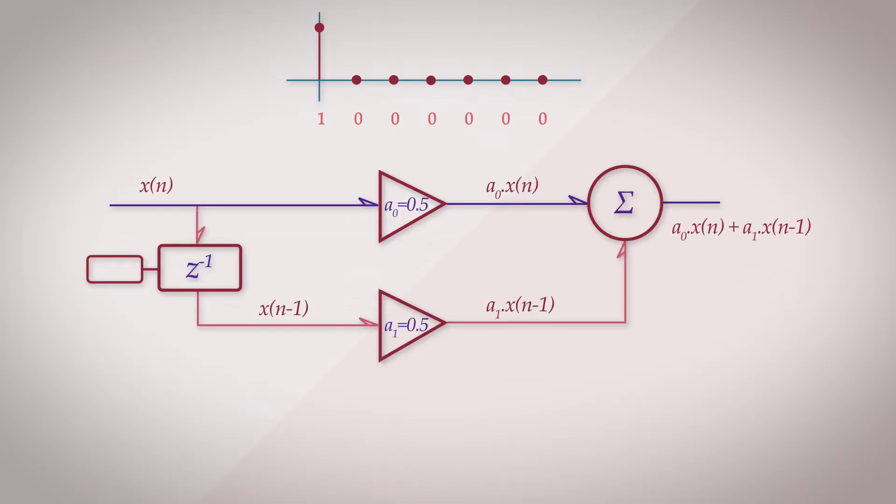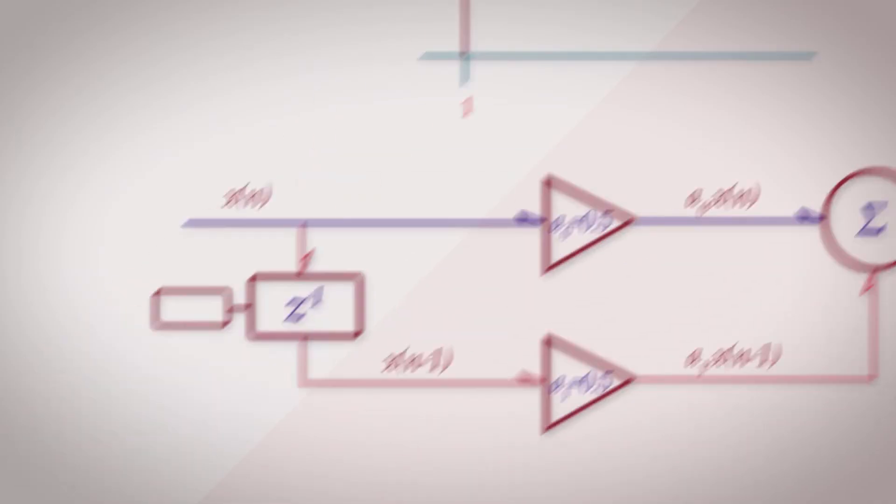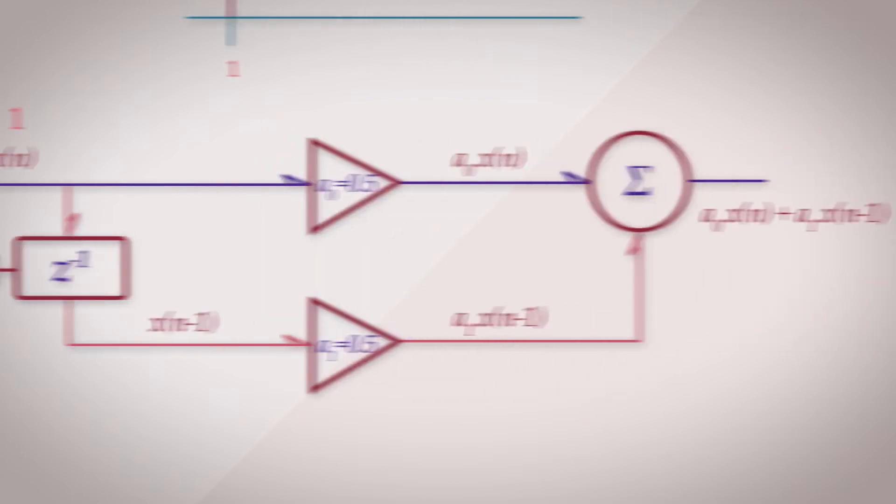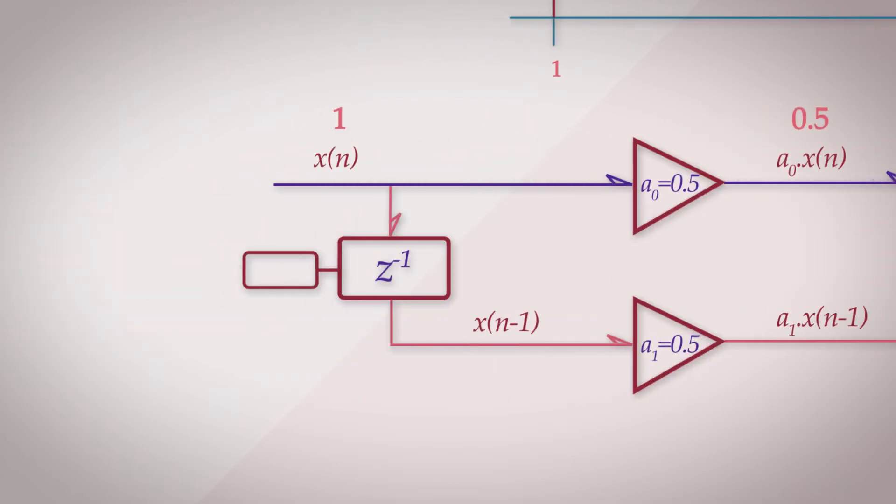Here we have our first order feedforward filter, with the coefficients of a0 and a1 as 0.5. The first sample that enters is 1, which is the impulse itself. So using the difference equation, the output signal is just the direct sample, whose value is 1, weighted by the coefficient of a0, which is 0.5.